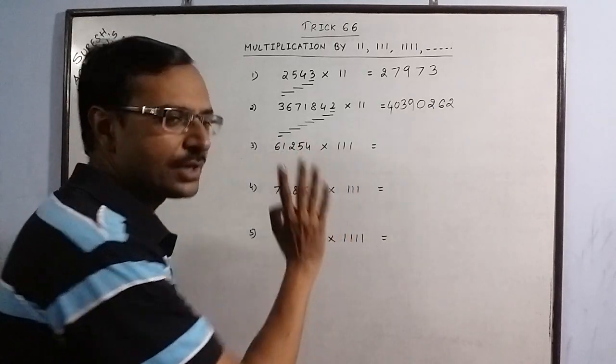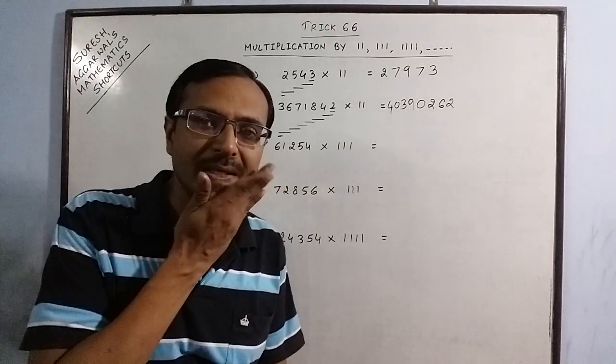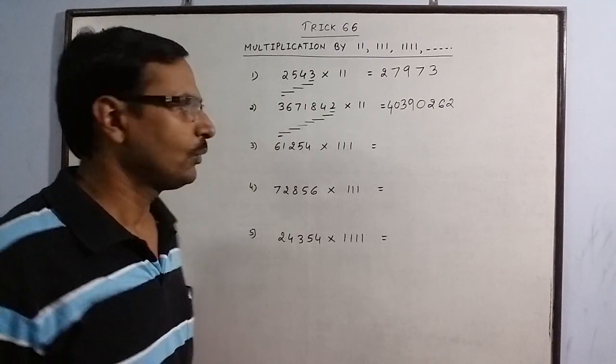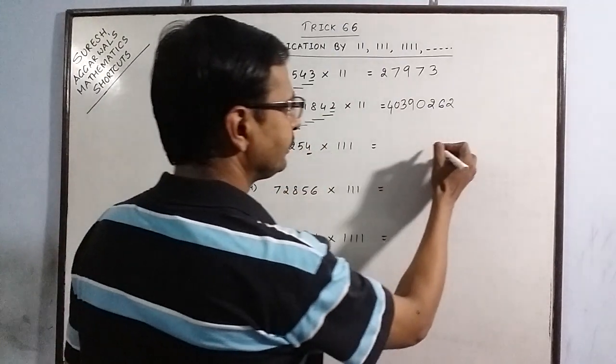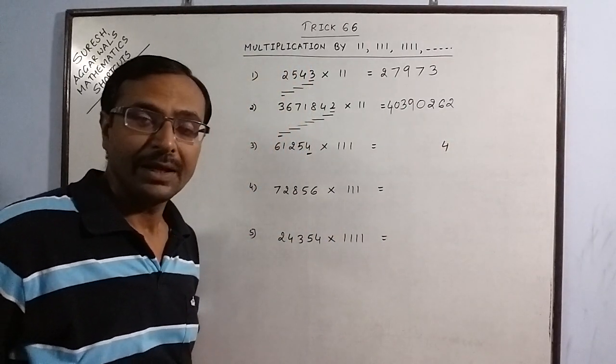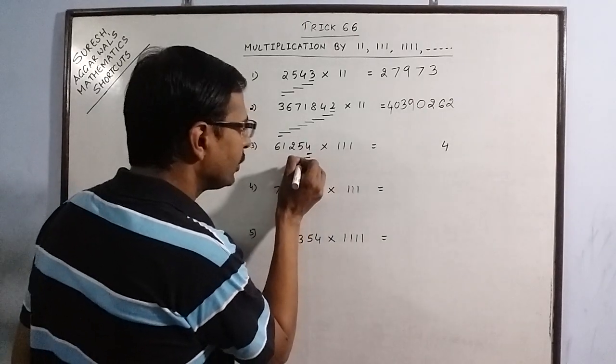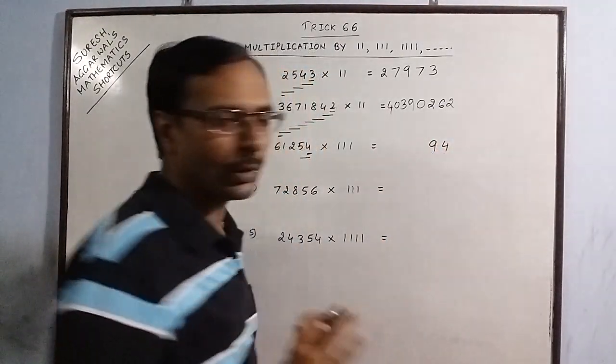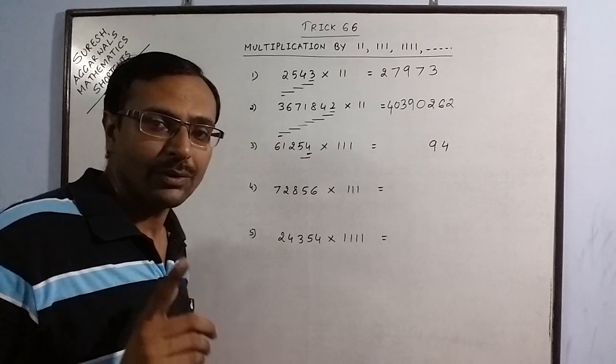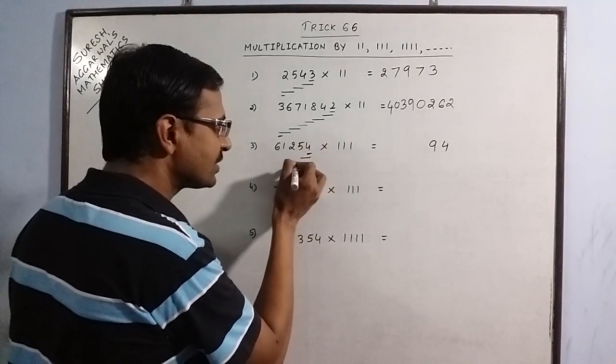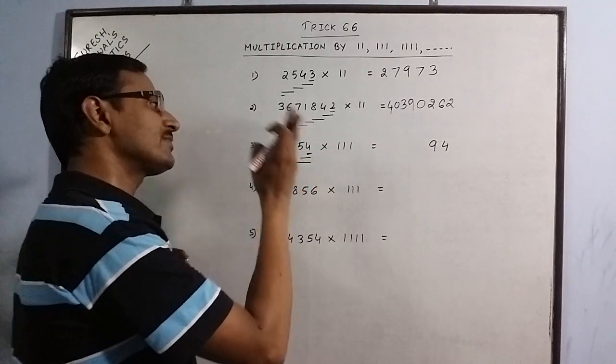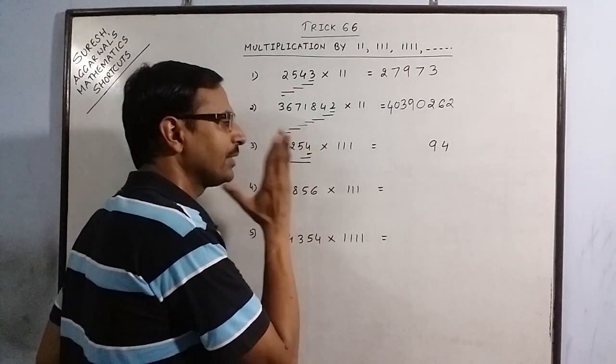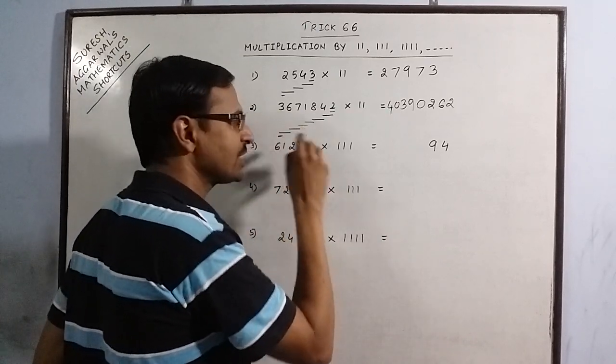Now let us come to 3 ones. Now for 3 ones, here we have taken 2 numbers at a time because there were 2 ones. Now what we do is we start from the single digit 4 which will come as it is. Then slowly reach up to 3 digits. From 4 you take 1 more digit. So this becomes 4 plus 5, 9. No carries. Now do not leave 4 until you have reached 3 digits. 4 plus 5, 9, 9 plus 2, 11. This is the difference. You cannot leave this digit until you have reached the number of digits which are equal to number of ones.